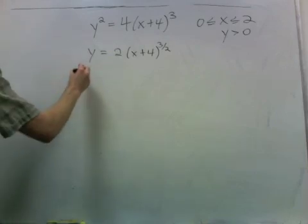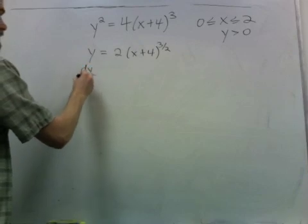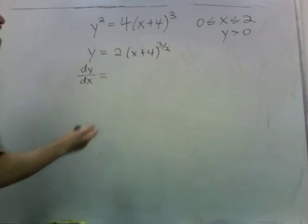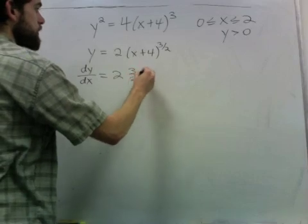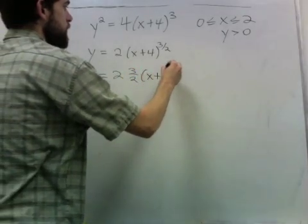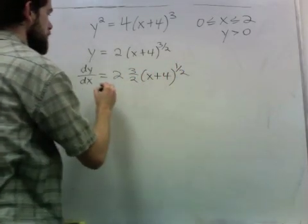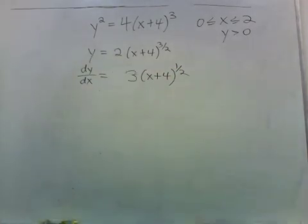In the arc length formula, we need to find the derivative. So the derivative of this, I have 2 times 3 halves, times x plus 4, to the 1 half, which is just that.